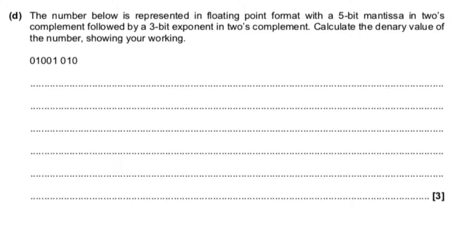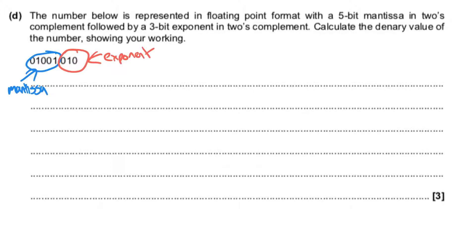We're now doing a question on floating point with a 5-bit mantissa in 2's complement, which means we can have negative numbers, and a 3-bit exponent also in 2's complement, which means we can have a negative exponent making a small number and a positive exponent making a bigger number. We've got to calculate the value from this. This bit over here is the mantissa, and this one over here is the exponent. I want to turn that from binary — ones and zeros — into the denary number. The easiest way is: it's zero, the dot is always between the first two assuming it's been normalised, giving 0.1001.